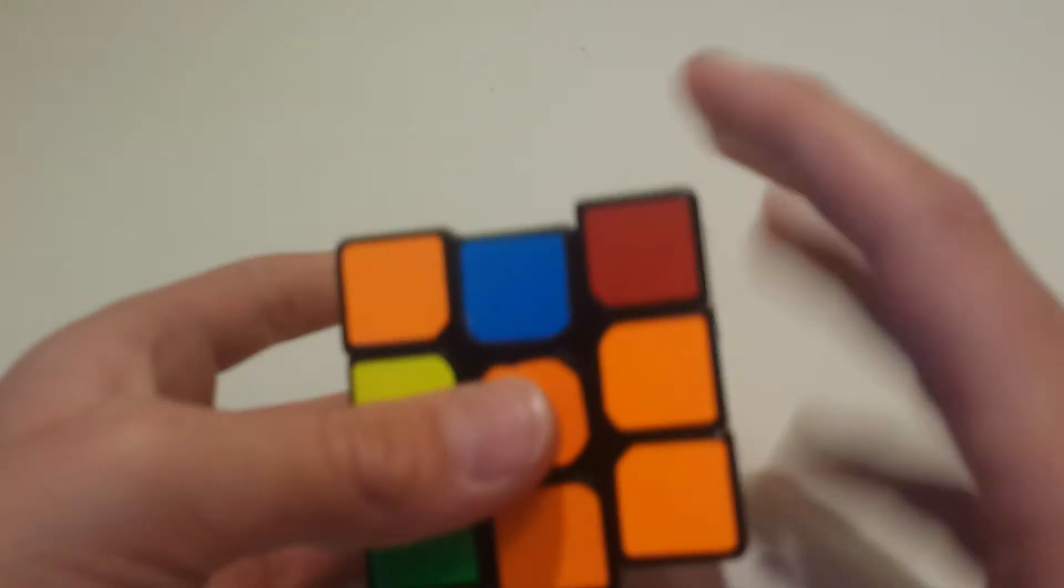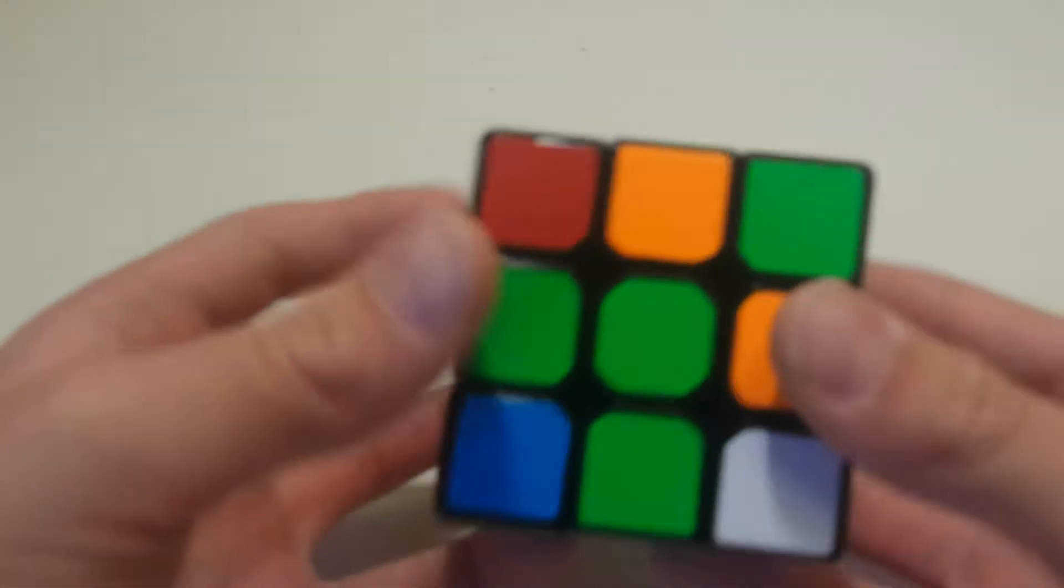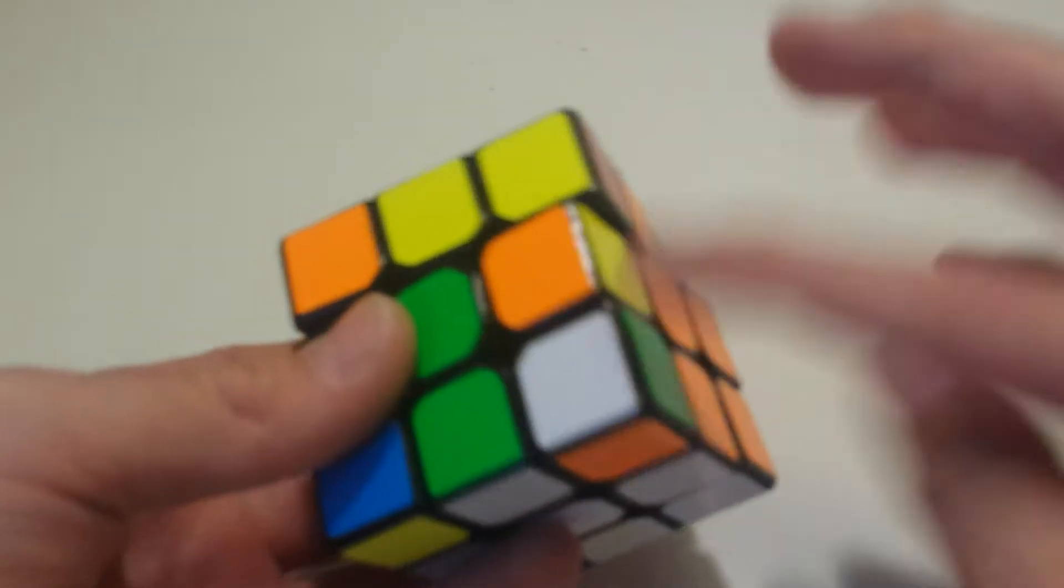So first of all, what I did was I put it so that the blue center is right here and the yellow center is right here. So then what I did was I did a U' to put this piece in.